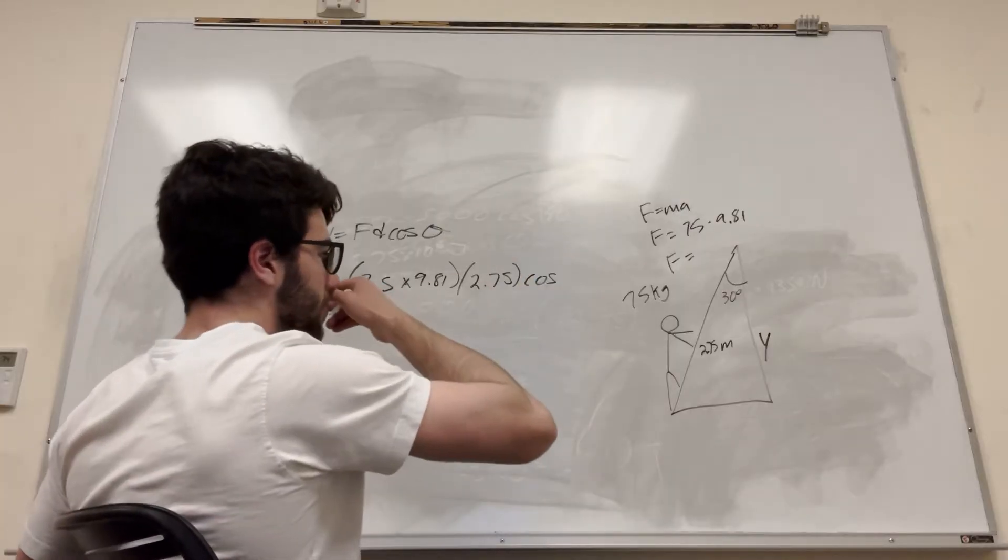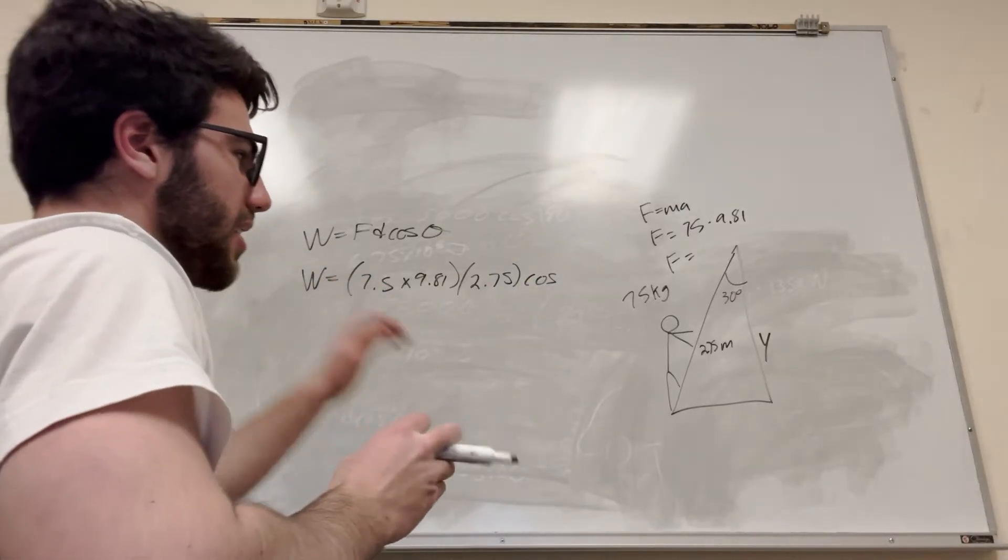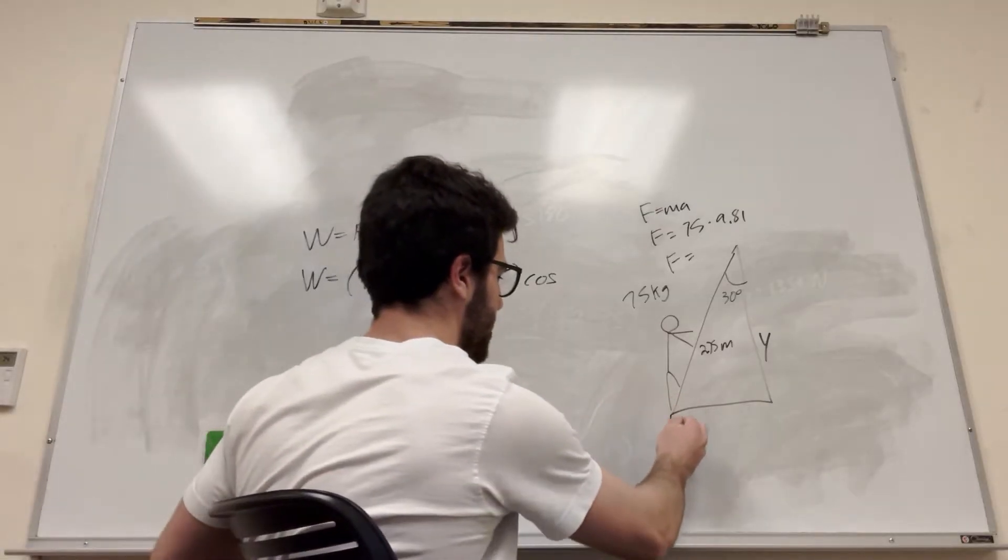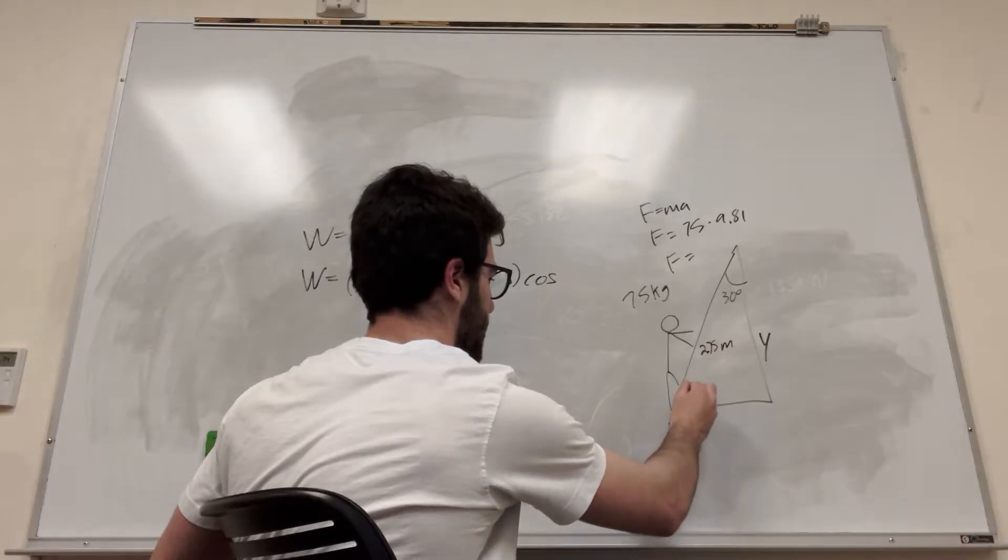But then this cosine, it's not going to be 30, right? Because the work of gravity, let's see, the force of gravity is pushing this way, right?